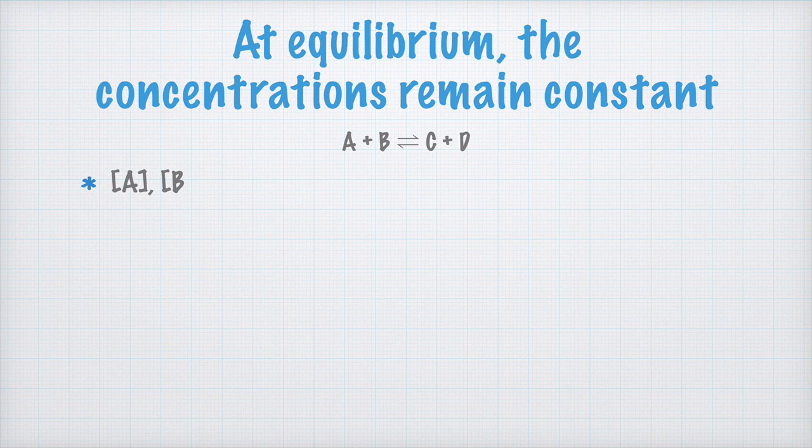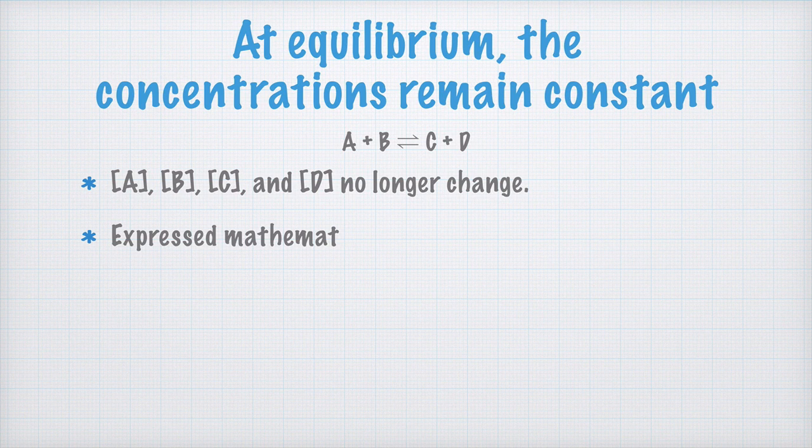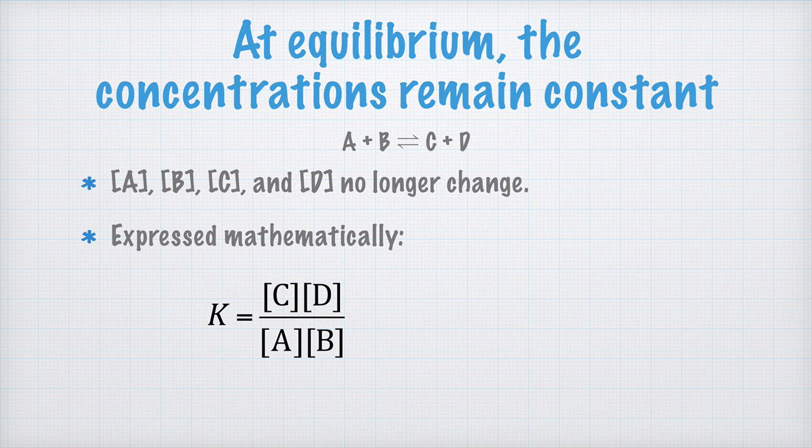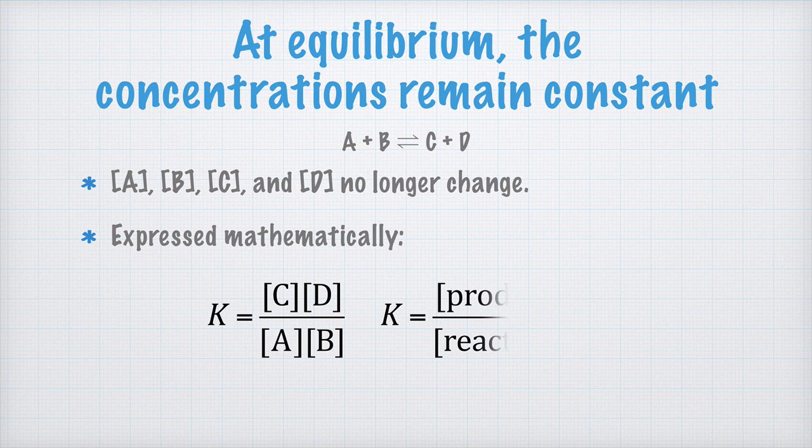We can express this mathematically. We write it like this, that a constant K is equal to the concentration of C times the concentration of D divided by the concentration of A times the concentration of B. We can also write that this constant K is equal to the concentration of the products divided by the concentration of the reactants.